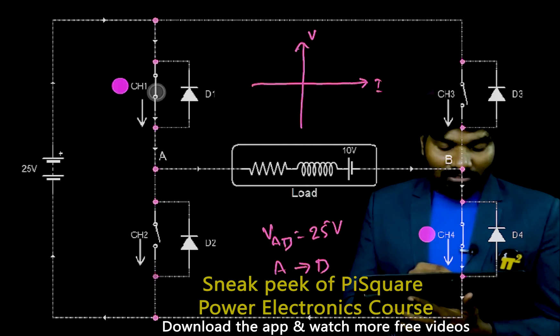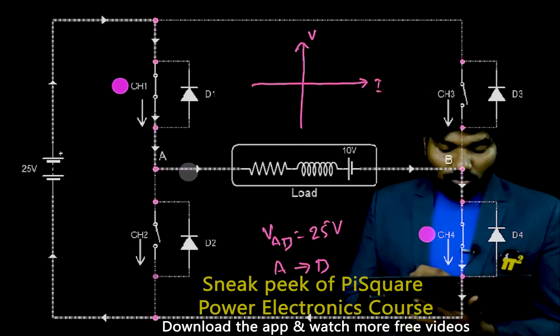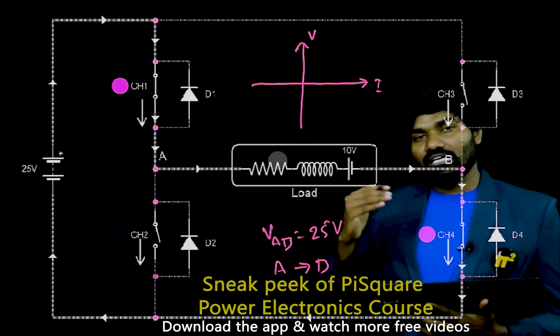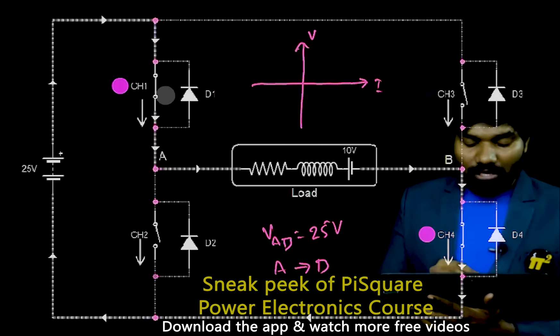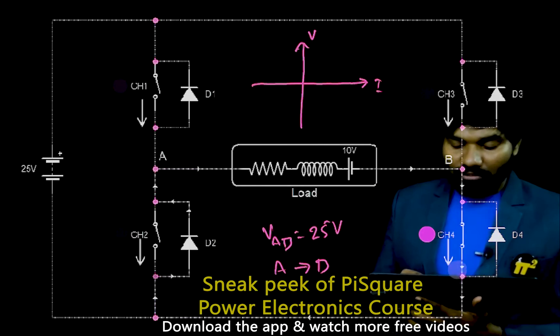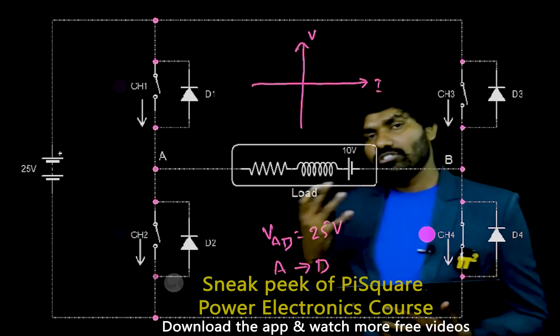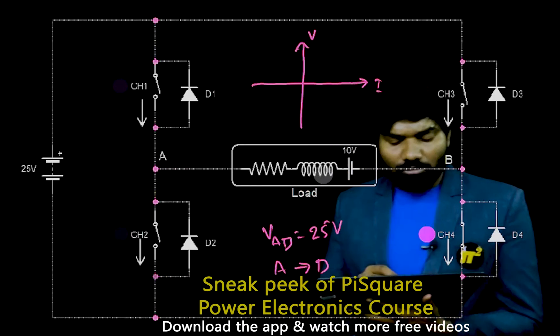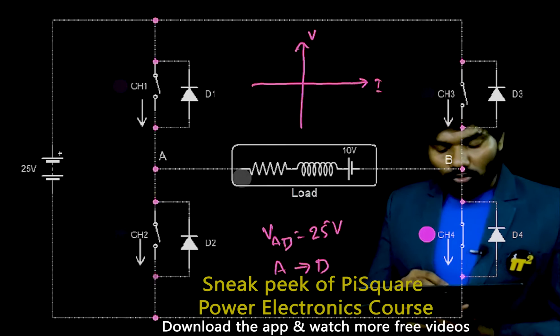Let me operate again. If I turn this on, current is flowing slowly. Current is increasing. Inductor is charging. Current is increasing. Now, the moment I open this, inductor will get discharged through this. Once the inductor energy is exhausted, then current will be zero.